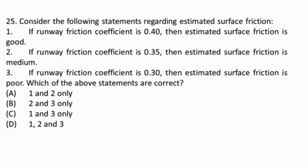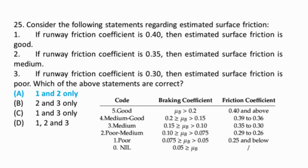Question 25: If the runway friction coefficient is 0.4, then the estimated surface friction is good. For a friction coefficient between 0.30 to 0.35, surface friction is medium. For a friction coefficient below 0.25 to 0.30, surface friction is poor. Thus only statements 1 and 2 are correct.